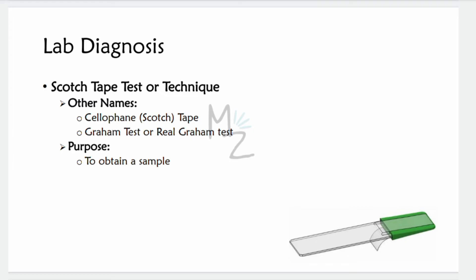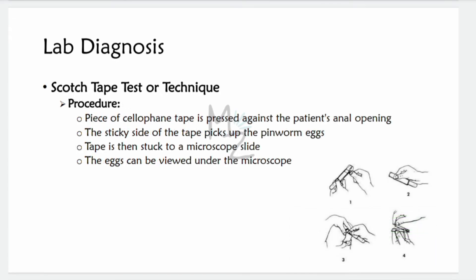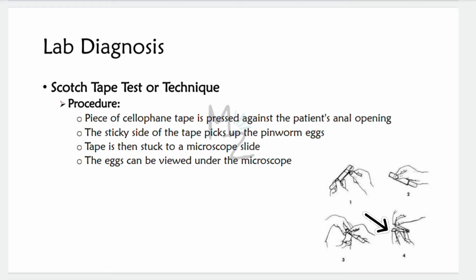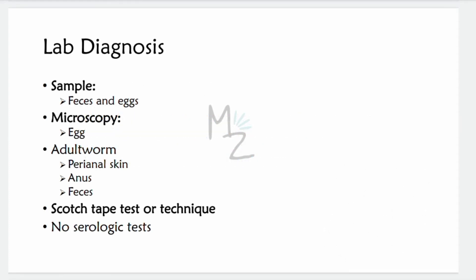Scotch tape test procedure: take a piece of scotch tape and press the sticky side against the patient's anal opening. The sticky side picks up the pinworm eggs. The tape is then stuck to a microscope slide and the eggs are viewed under the microscope. Unlike other intestinal nematodes, these eggs are not found in feces. The small whitish adult worms can be found in stools or near the anus of diapered children.